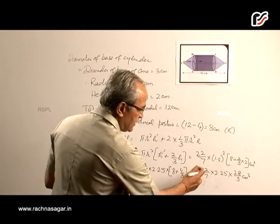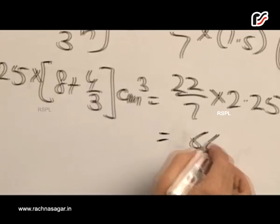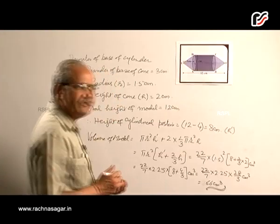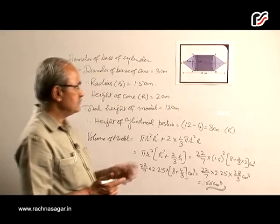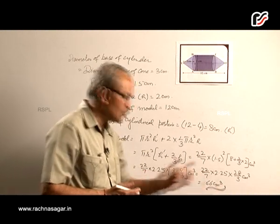And if you work it out, we simplify it, we get this to be equal to 66 centimeter cube. So therefore, volume of air in the model is 66 centimeter cube.